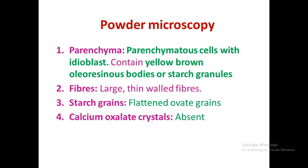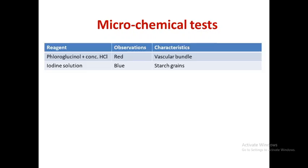In powder microscopy of ginger, parenchymatous cells with idioblasts contain yellowish-brown oleoresinous bodies or starch granules. Large thin-walled fibers are present, along with flattened oval starch grains. Importantly, calcium oxalate crystals are absent in ginger. In the microchemical test, vascular bundles show red color with fluoroglucinol and concentrated HCl, and starch grains show blue color with iodine.